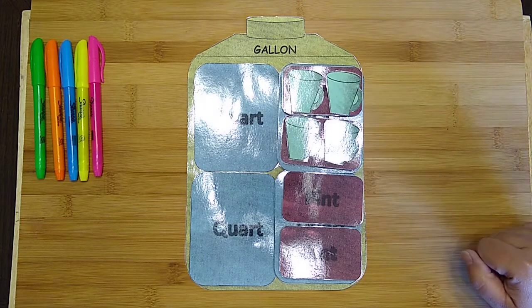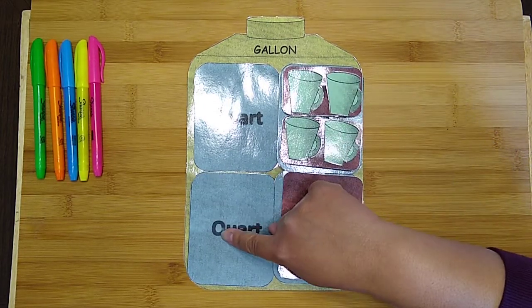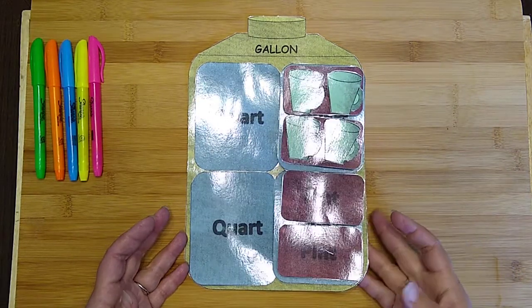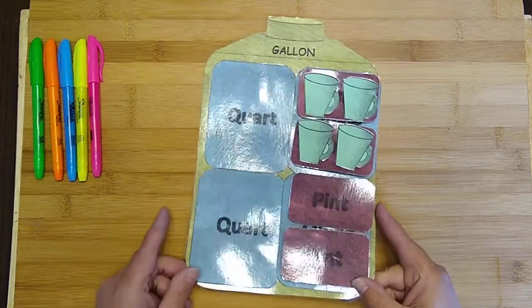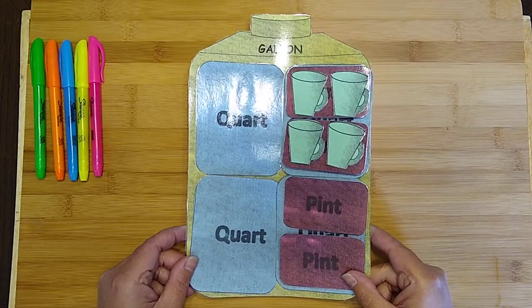How many cups do you think are in a gallon? We could count by four, so we can go four, eight, twelve, sixteen. So this is just an easy way to look at it to help us think about how big the different sizes of measurements are that we're going to talk about today.